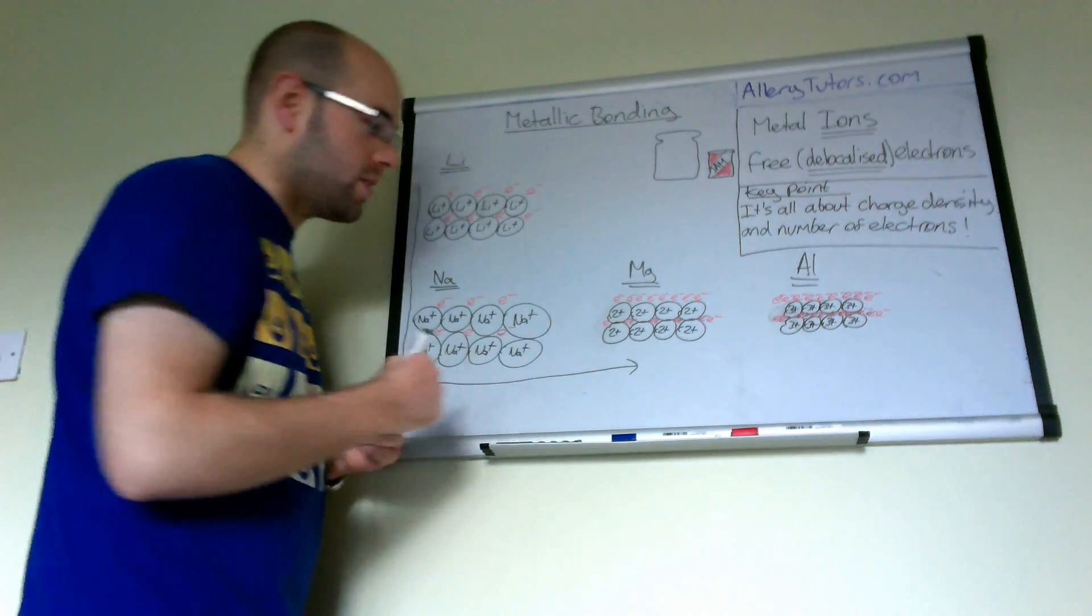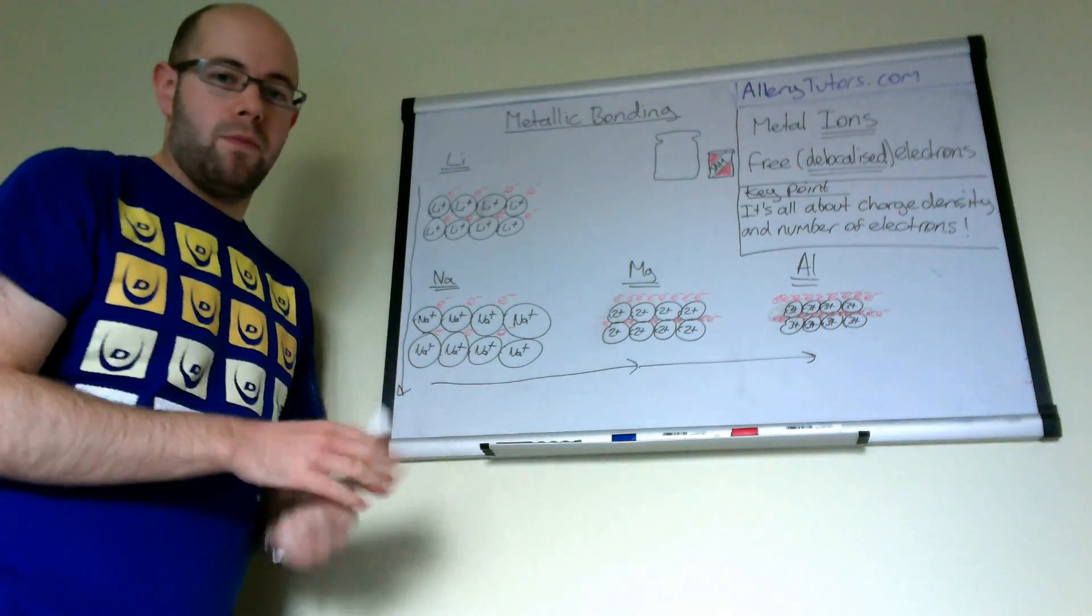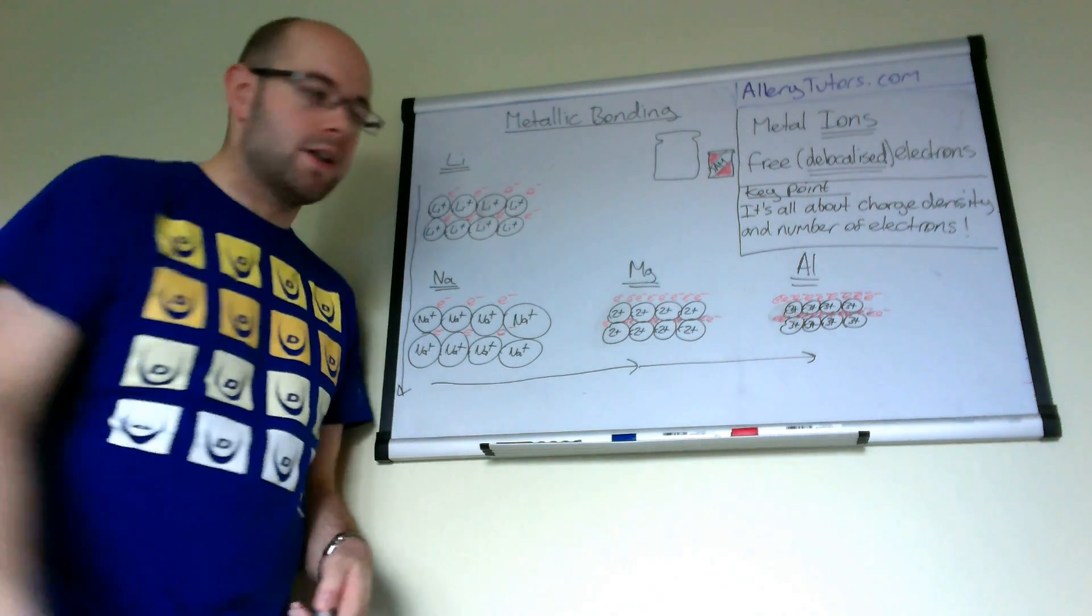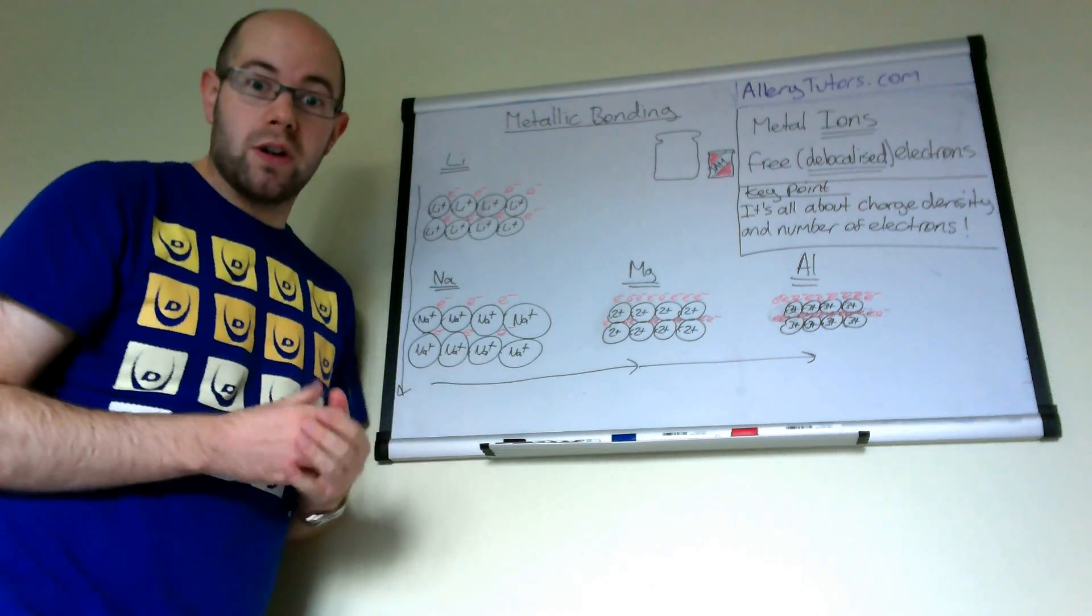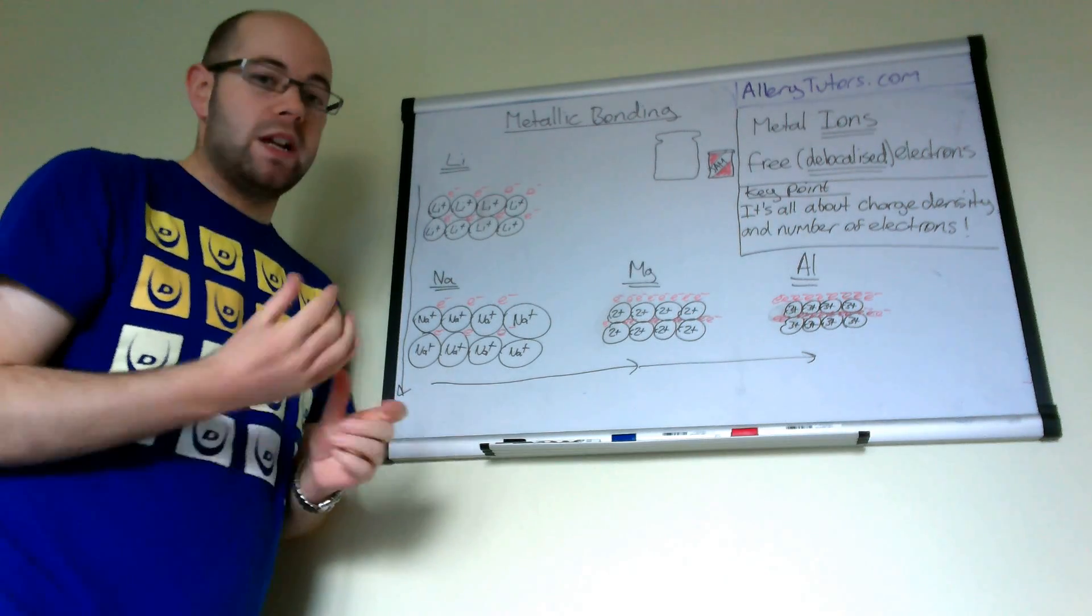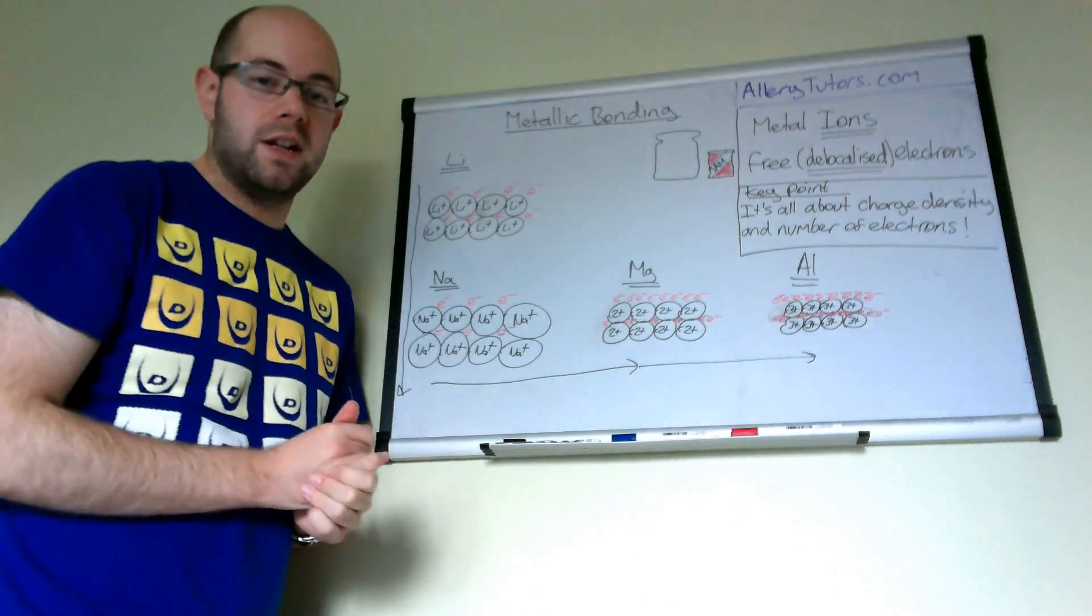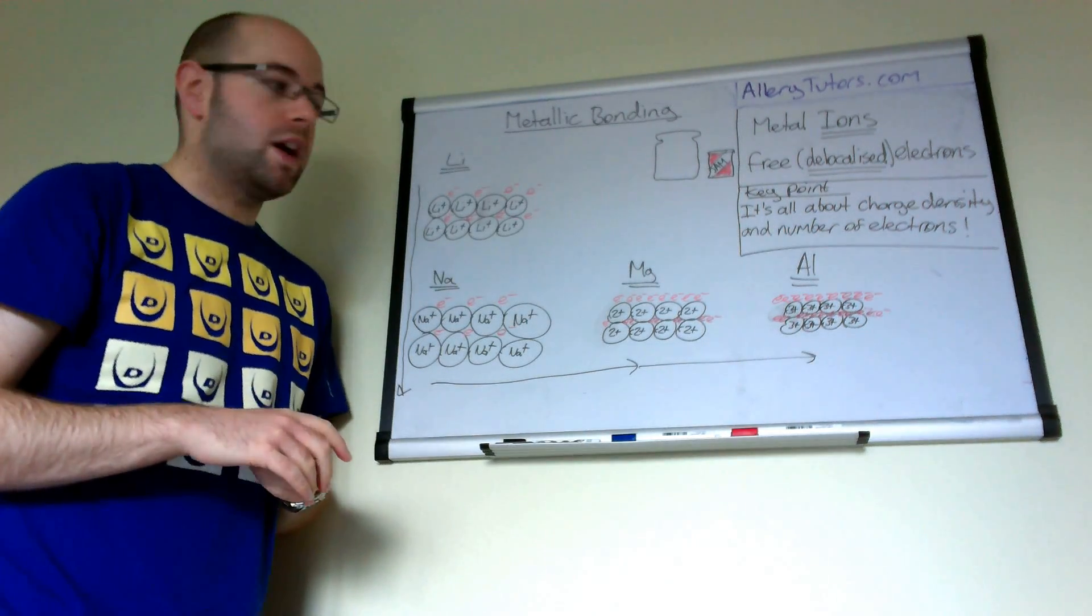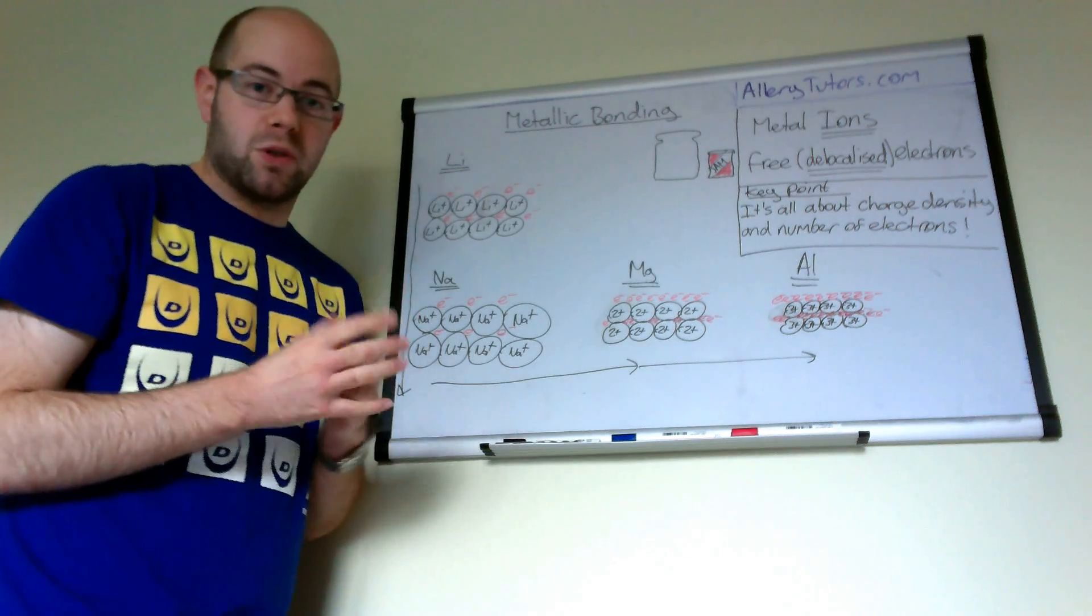If we carry on along the periodic table, we miss the transition metals gap and come to group three, which is aluminum. Aluminum is even stronger than magnesium. The reason is higher charge density. The ions are now three plus ions and they're a bit smaller, which helps. That helps quite a lot.